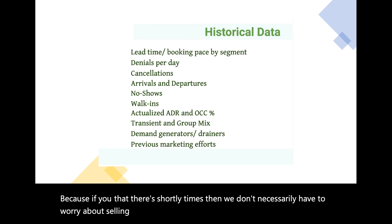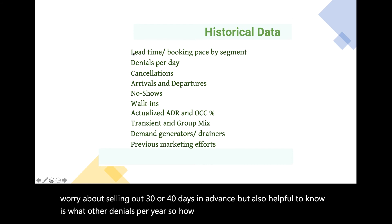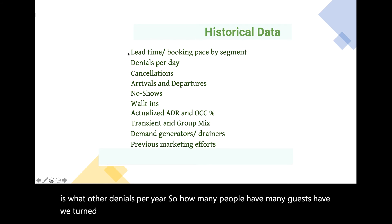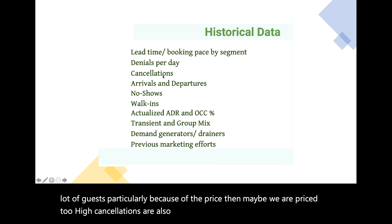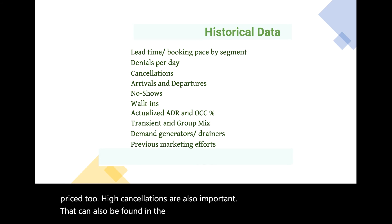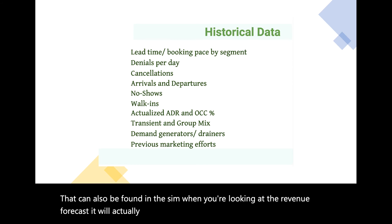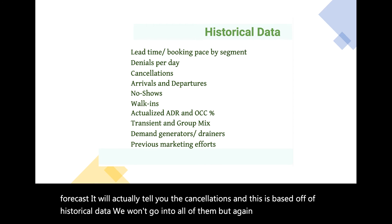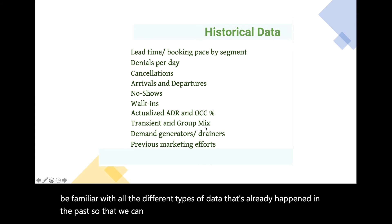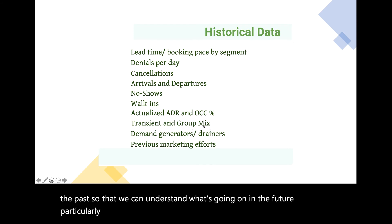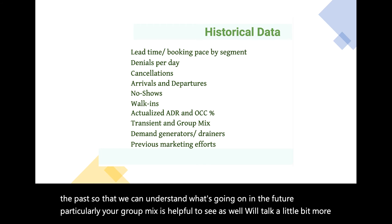If you know there are short lead times, we don't necessarily have to worry about selling out 30 or 40 days in advance. It's also helpful to know the denials per year — how many guests have we turned away? This can be very insightful because if we're turning away a lot of guests, particularly because of price, maybe we are priced too high. Cancellations are also important and can be found in the sim under the revenue forecast. Your group mix is also helpful to see, and we'll talk more about that when discussing channel management.